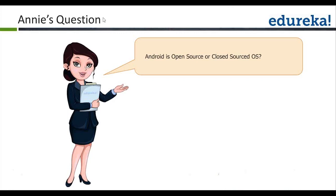Next question: is Android open source or closed source? Android is an open source operating system. What does open source mean? It means you have access to the source code — you can go through the platform source code and even create your own operating system based on Android.